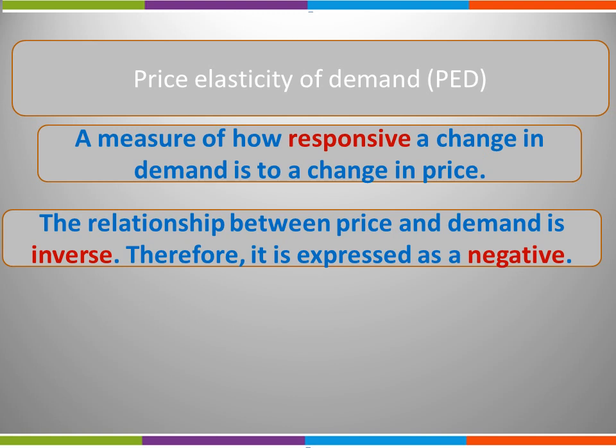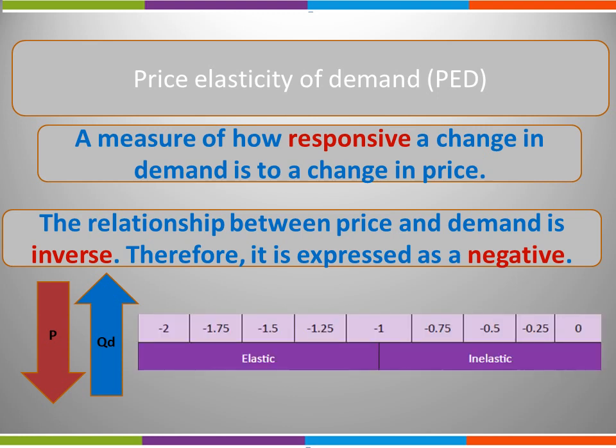PED is a measure of the responsiveness of demand to a change in price. The relationship between price and demand is inverse. This means if the price goes down, the quantity demanded will go up, and vice versa. Therefore, it is expressed as a negative. In economics, we sometimes use absolute numbers and therefore we ignore the minus. This was covered in part 1 of this series of videos.